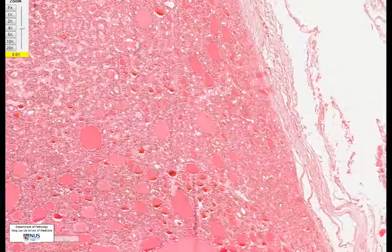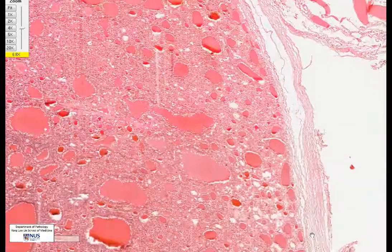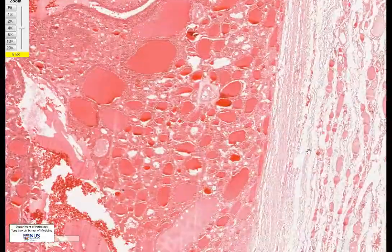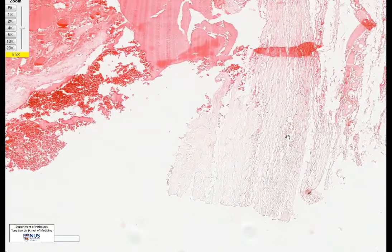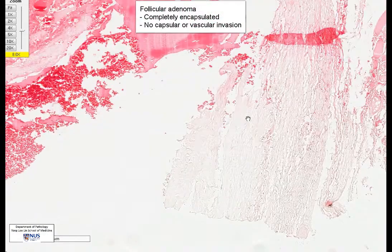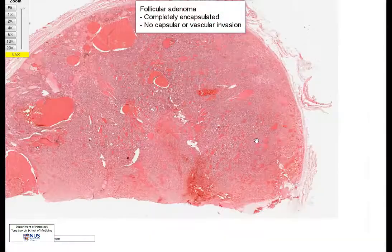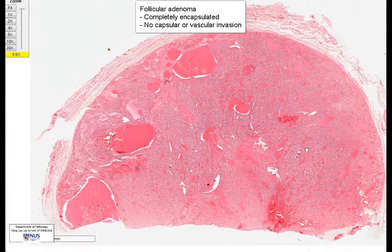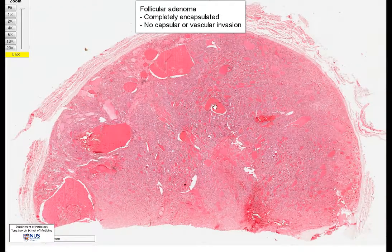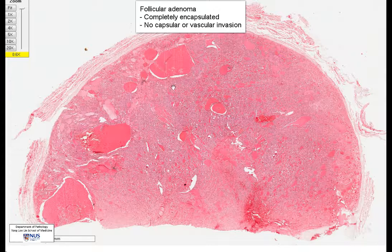So if the entire capsule that we have sampled — in all the areas examined of this nodule — shows no capsular invasion and no vascular invasion, the diagnosis is therefore a follicular adenoma, which is a benign neoplasm. A hemithyroidectomy or lobectomy is sufficient treatment.